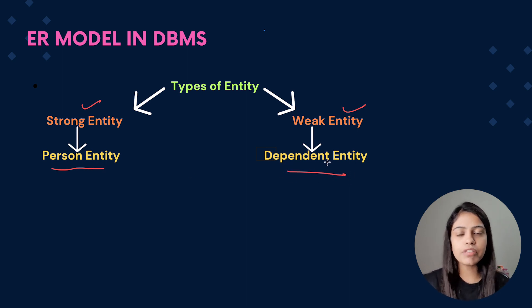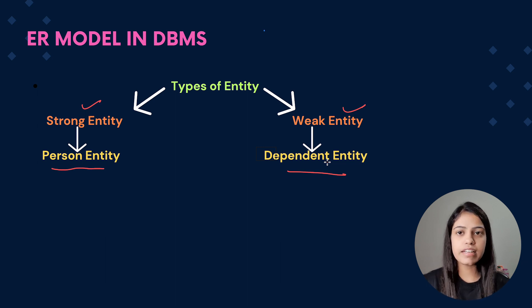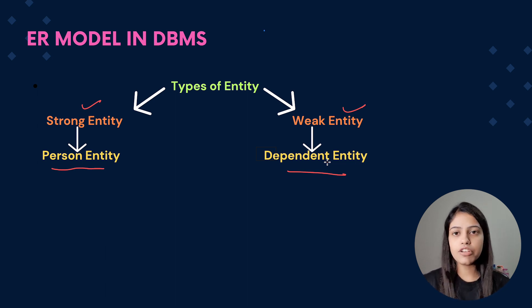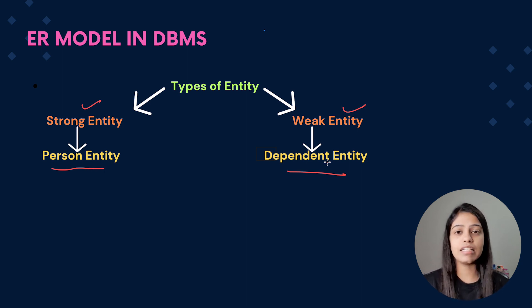So what is a strong entity? A strong entity is basically an entity which does not depend on any other entity — it can exist alone. Consider the example of a person entity. Person entity itself can define all the attributes of the person like the name, the age and much more. It's not dependent on other entities. For example, you get details like: Raj is a person who has age 20, a phone number, an Aadhaar card number, and so on — all independently. So a strong entity is one which can independently exist, and the second key thing is that a strong entity always has a primary key.